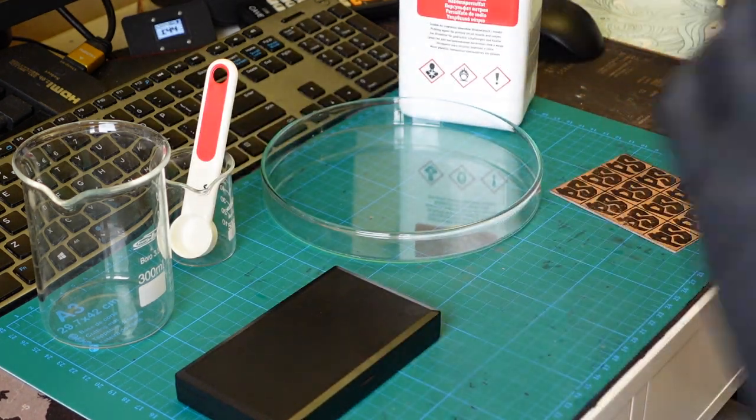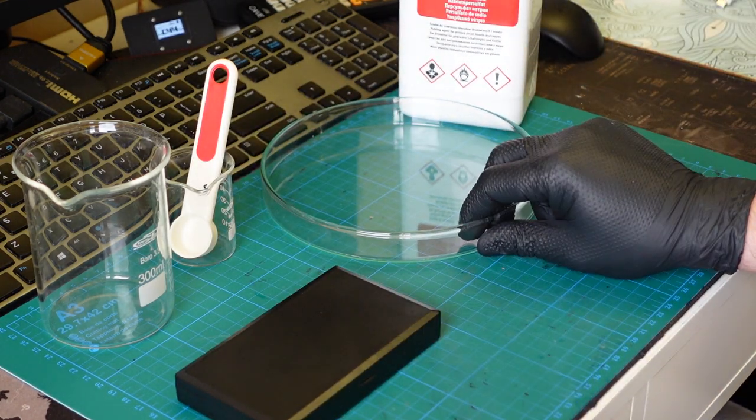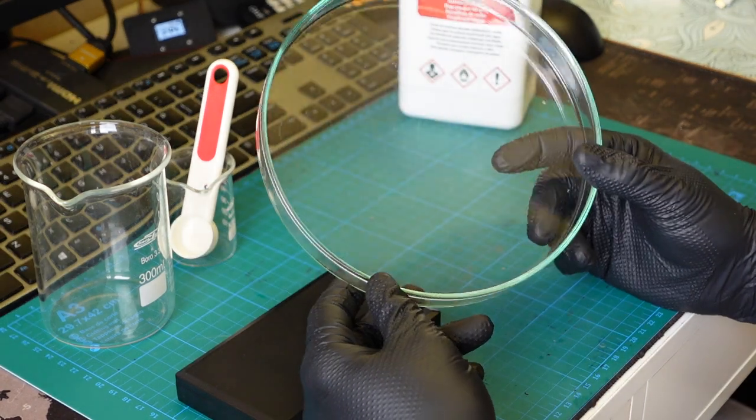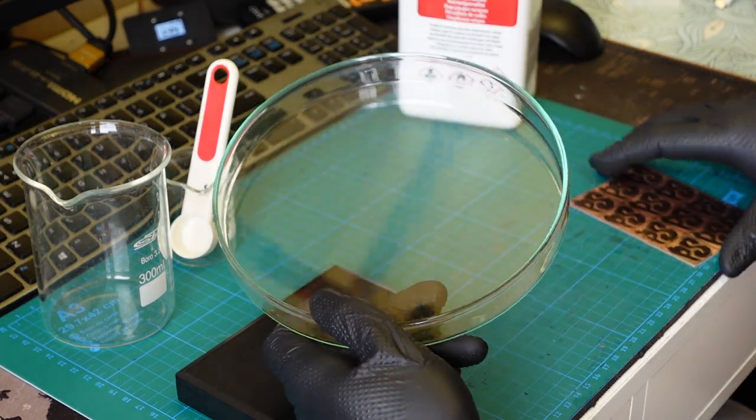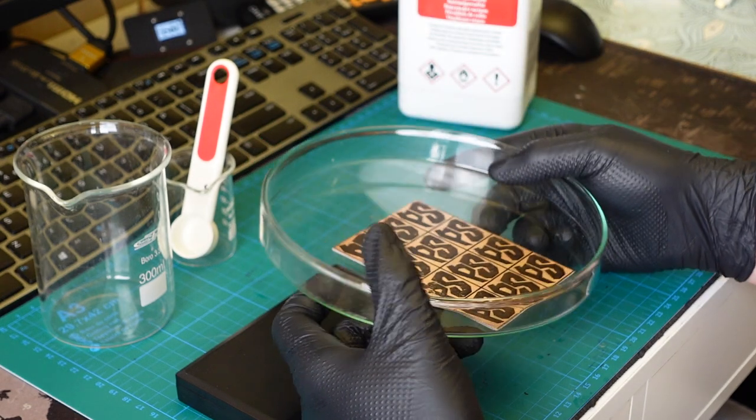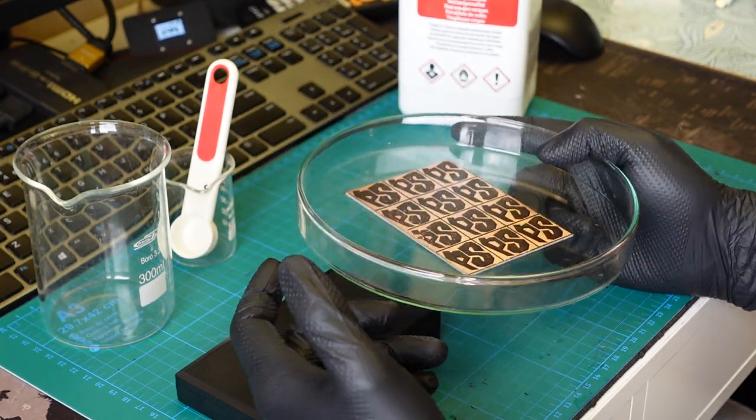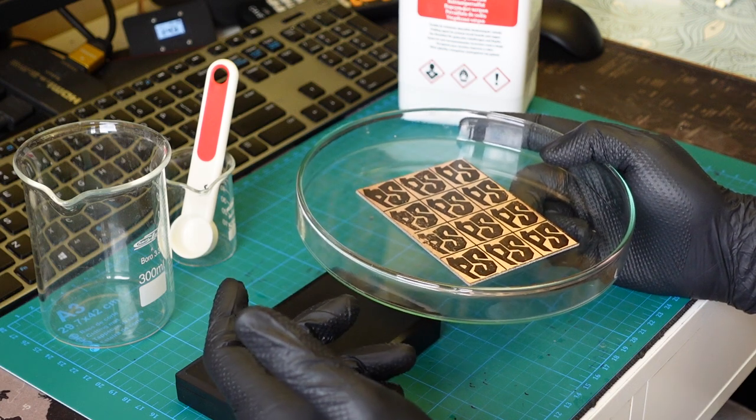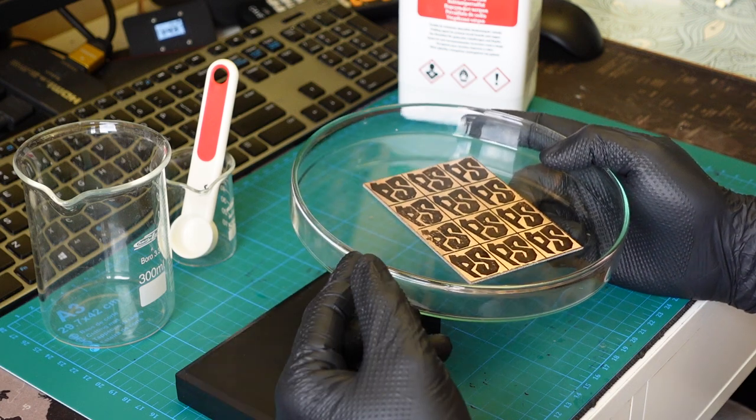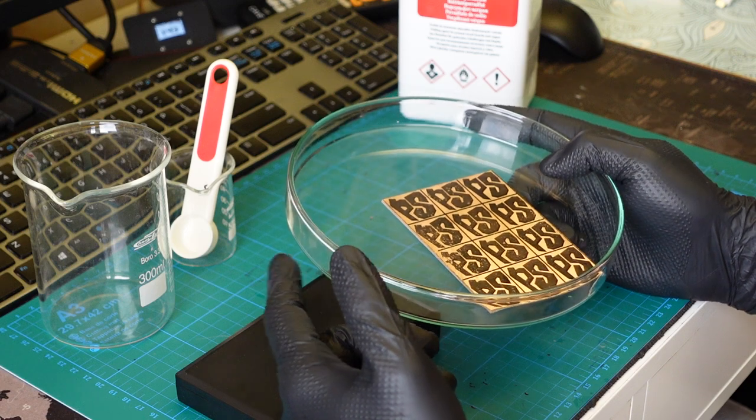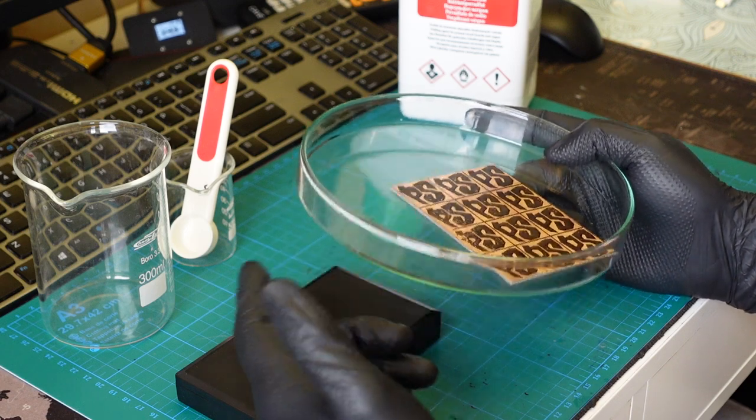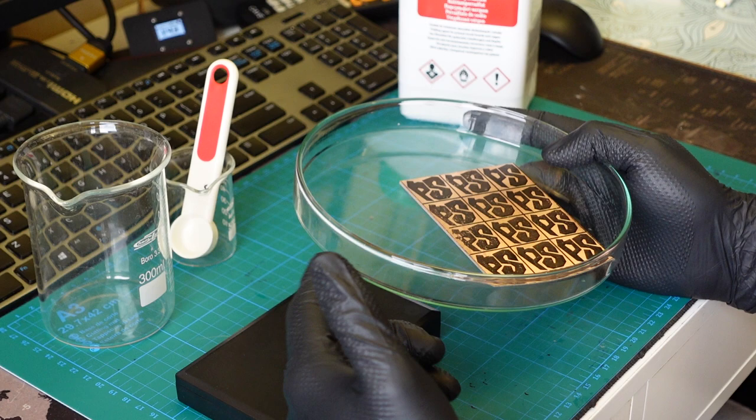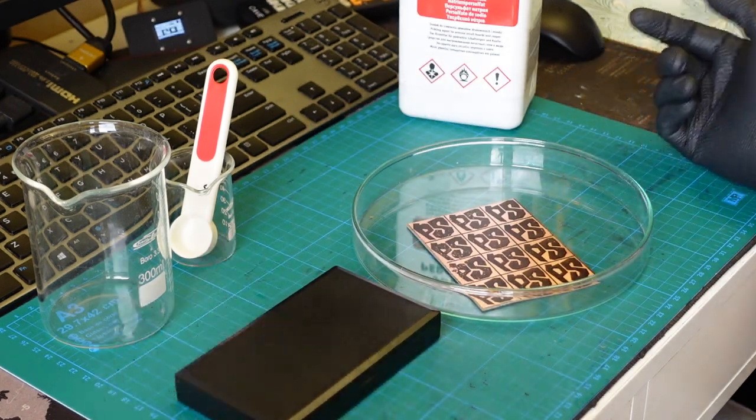The next thing you need is some containment device. It has to hold your PCB physically, and I would say you want something where you could pour at least 200 milliliters of water. In terms of materials, glass is obviously the easiest and safest choice.